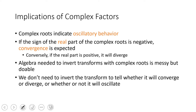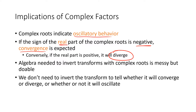Complex roots indicate oscillatory behavior; the sign of the real part indicates stability. If all real parts are negative, convergence is expected. If even one root has a positive real part, it's going to diverge — it's like a bad apple in the batch. Even one positive real root means it diverges. Algebra with partial fractions is needed to invert transforms with complex roots.